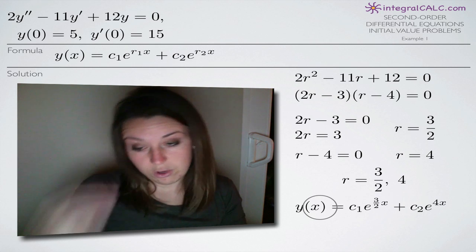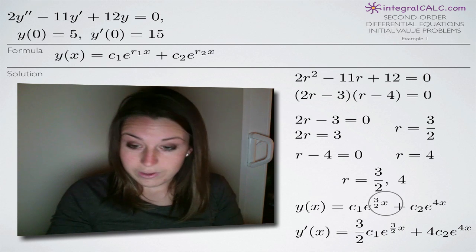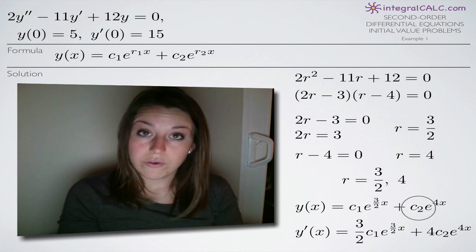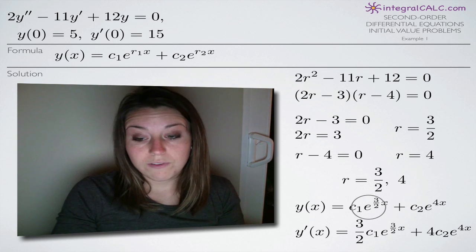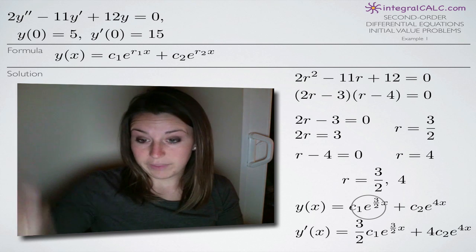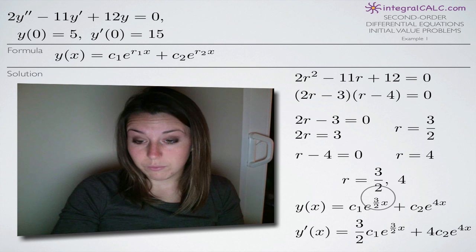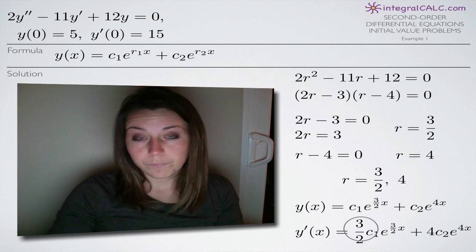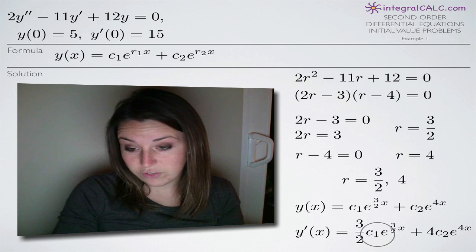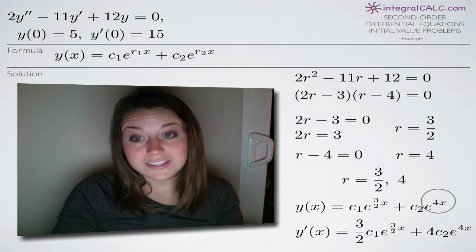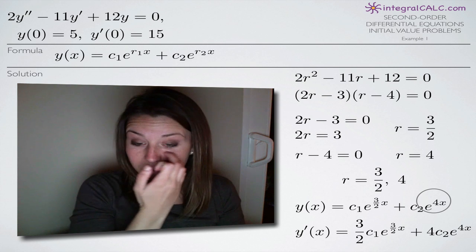This gives us our equation for y(x). Now we want to take its derivative. We treat c1 and c2 as coefficients on the exponential terms — they stay right where they are. The derivative of e to the power of a constant times x means we multiply that constant out in front, leaving the exponent intact. So we bring 3/2 out in front with c sub 1, and bring 4 out in front with c sub 2, giving us y prime of x.